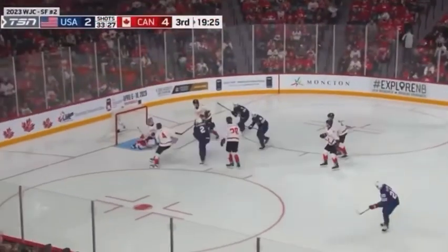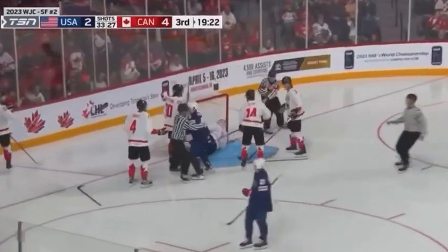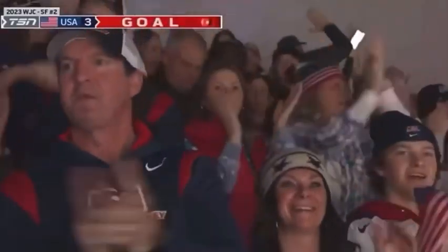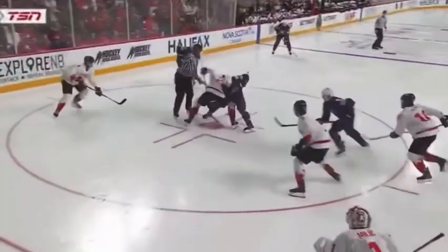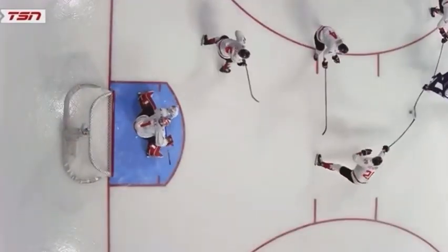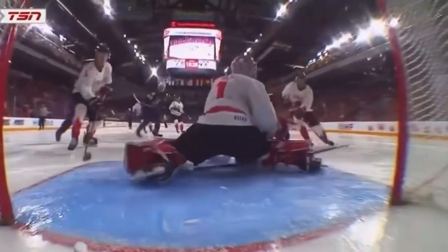Let's move on to the second goal that was disallowed. Canada is up 4-2 in the third period — it's the opening minute. USA has been pressuring; they were out-shooting Canada all game, actually, so this game kind of went either way. Rutger McGroherty, a Winnipeg Jets prospect, looks to get the game within one. A shot off the faceoff gets stopped by Millick, and then he bangs away at the rebound to put it in the net.